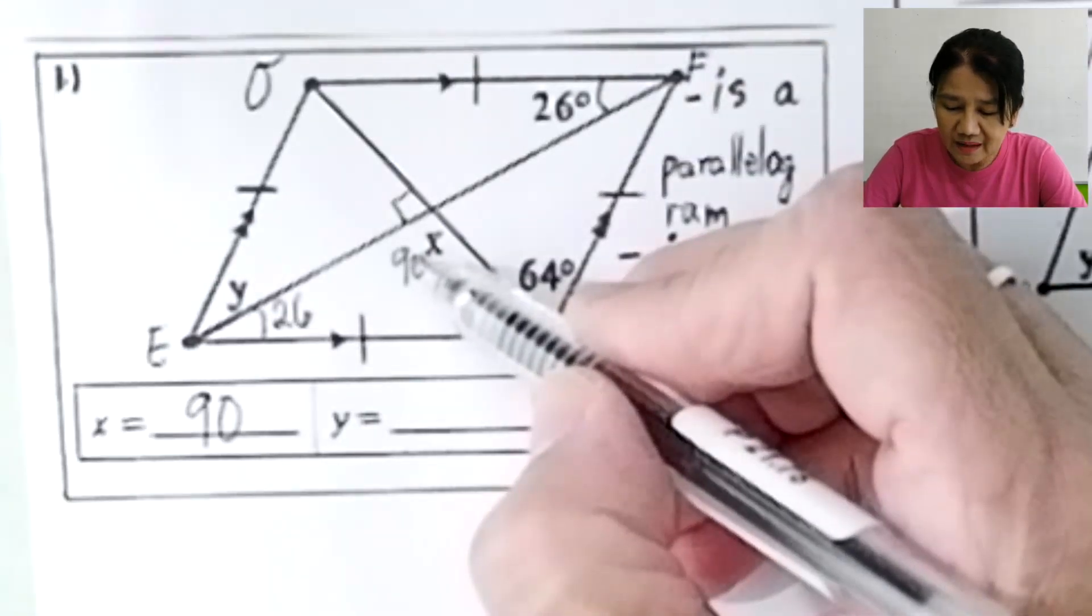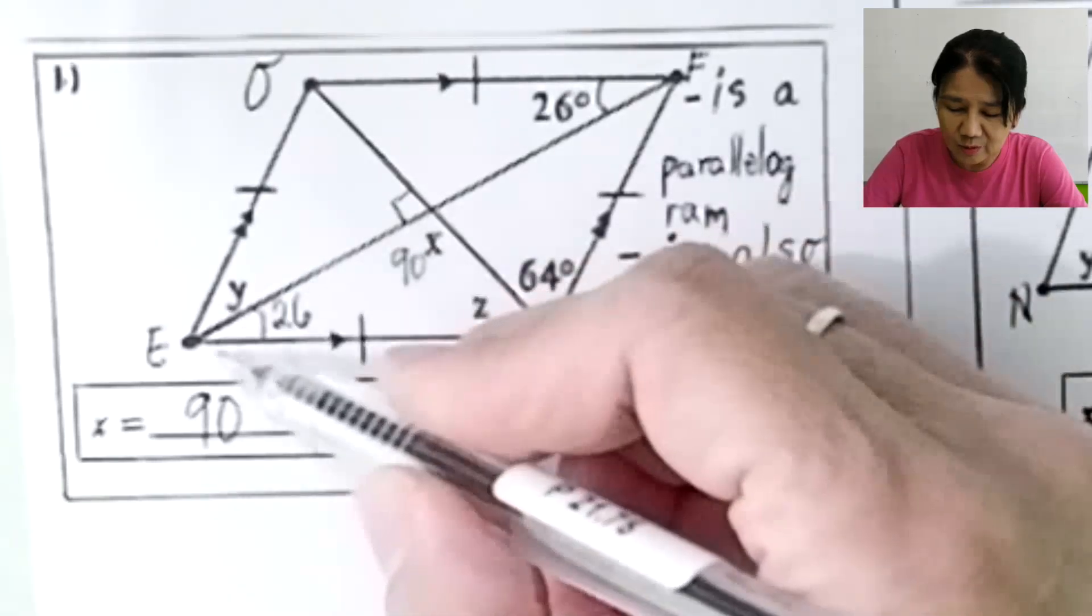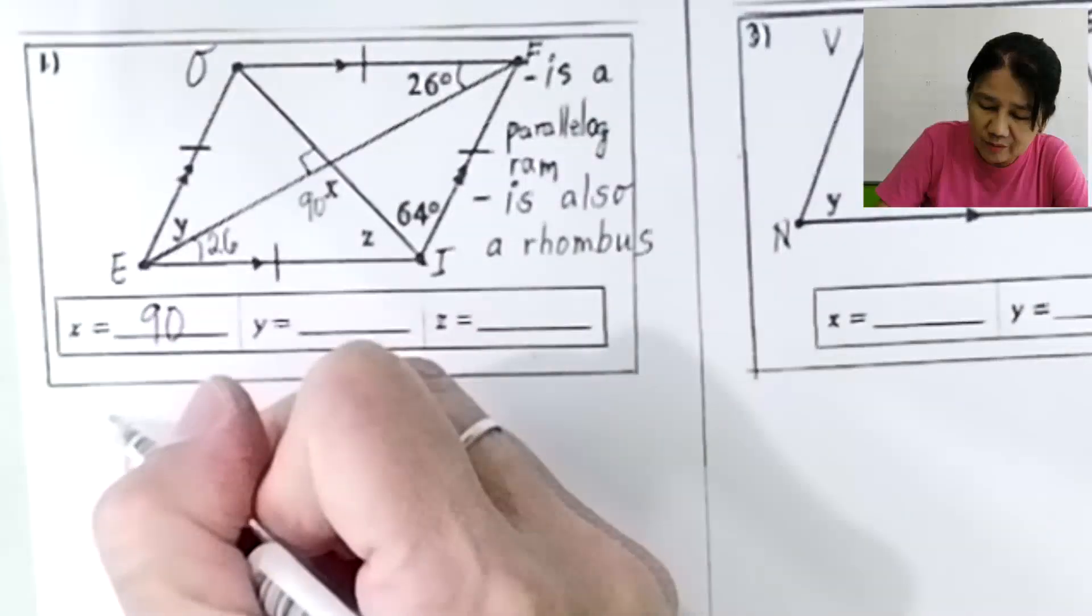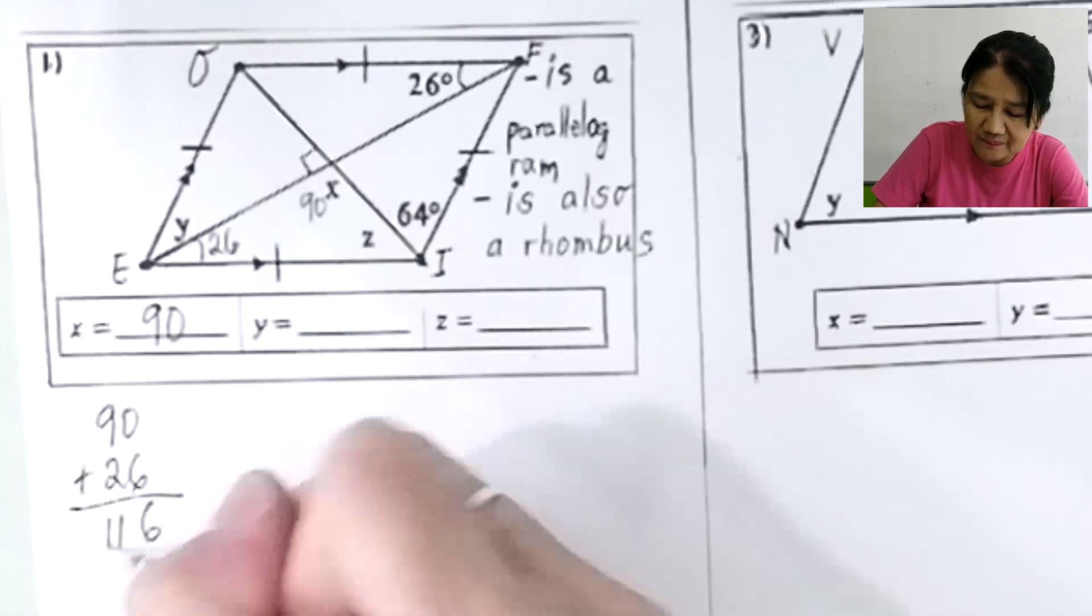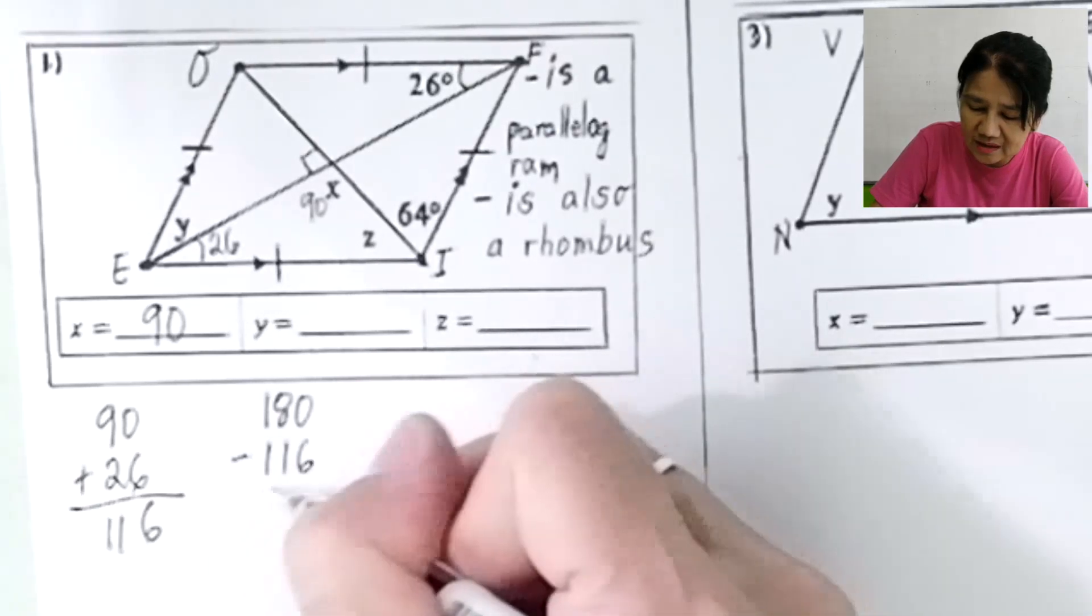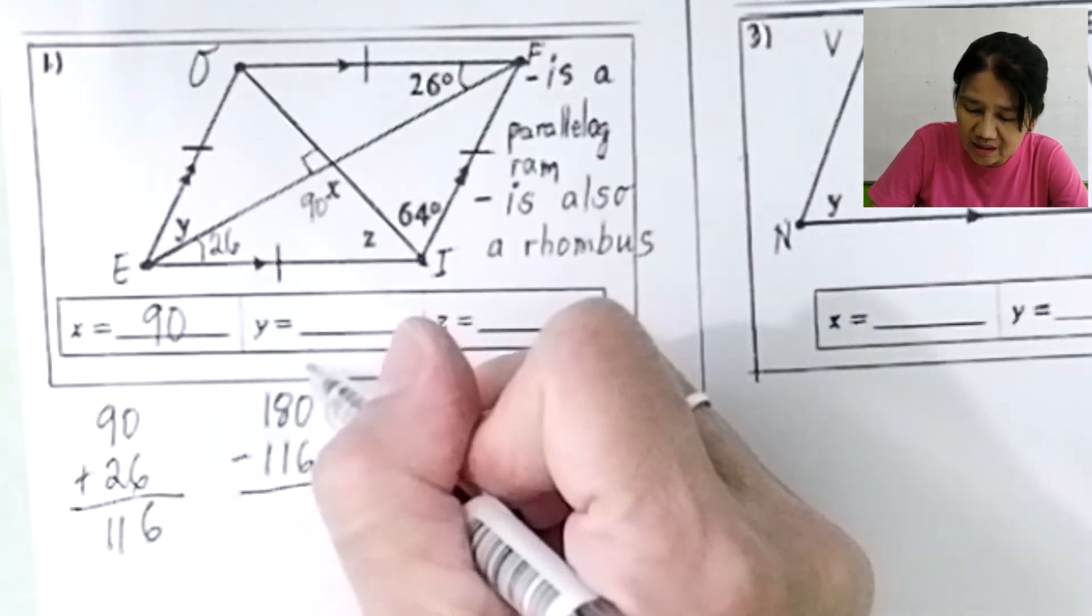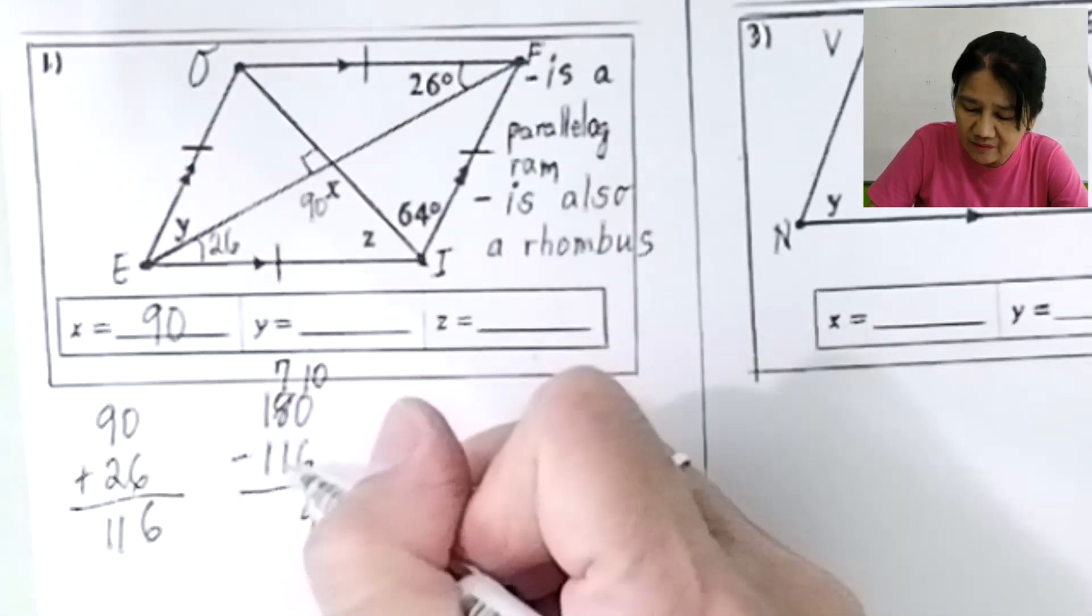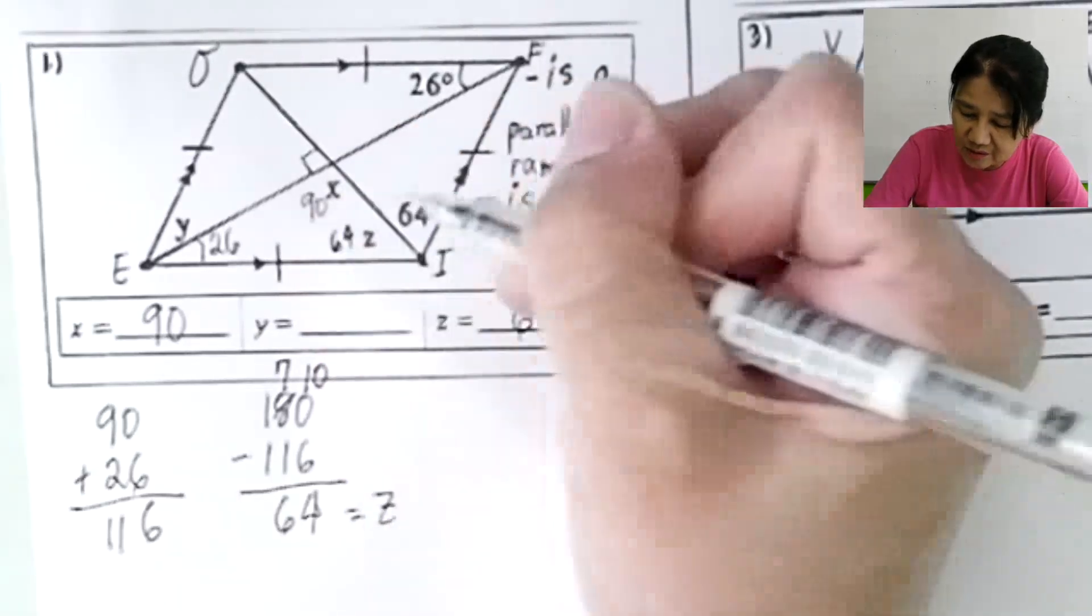Now let's take a look at this. 90 plus 26, plus Z must be equal to 180. Why? The sum of the angles of a triangle is 180. So to solve for Z, we have 90 plus 26. Add, 9 plus 2 is 11, that's 116. Subtract from 180. 180 minus 116 will give you the value of Z. 10 minus 6 is 4, 7 minus 1 is 6. So Z is 64.